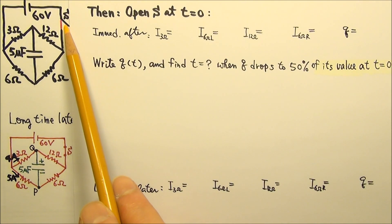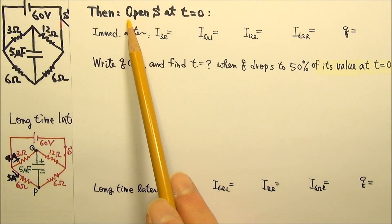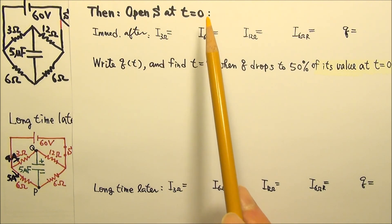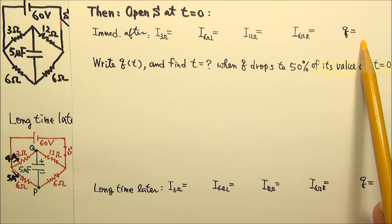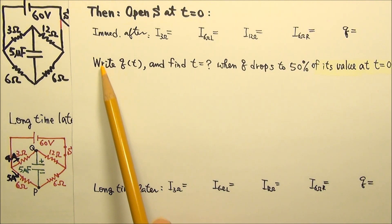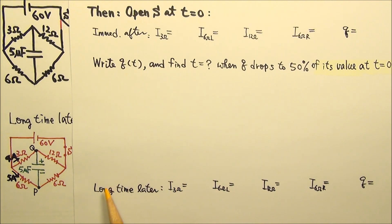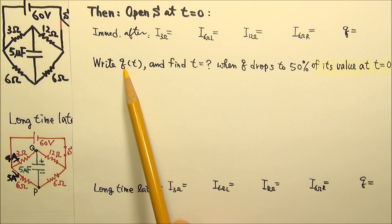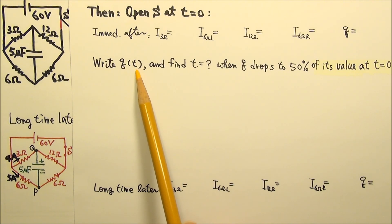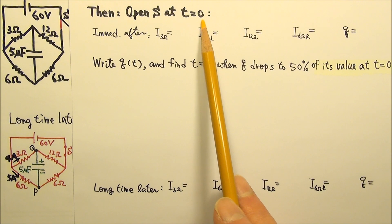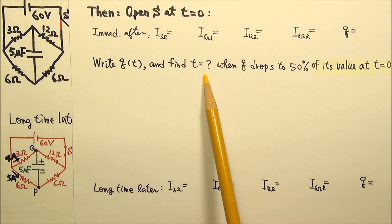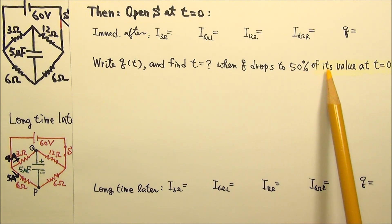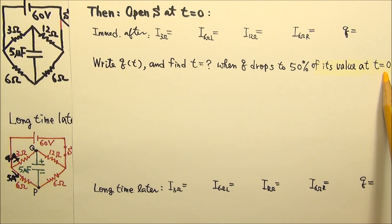After the switch has been closed for a long time, the switch is now opened at T equals zero. Find the current in each resistor and the charge on the capacitor immediately after and a long time later. Also write the charge on the capacitor as a function of time after the switch is opened, and find the time when the charge drops to 50% of its initial value at T equals zero.